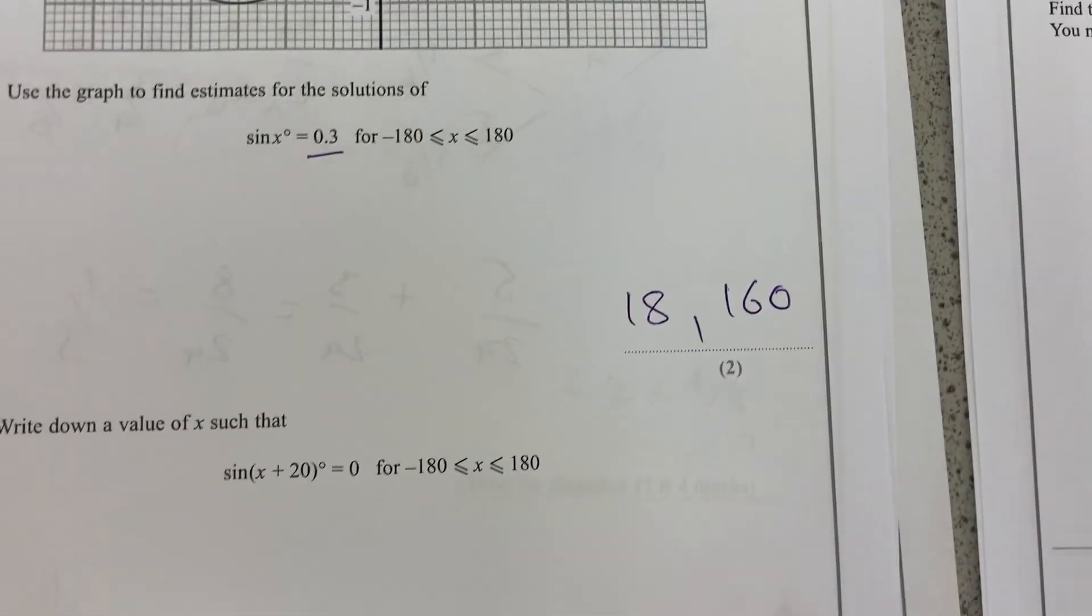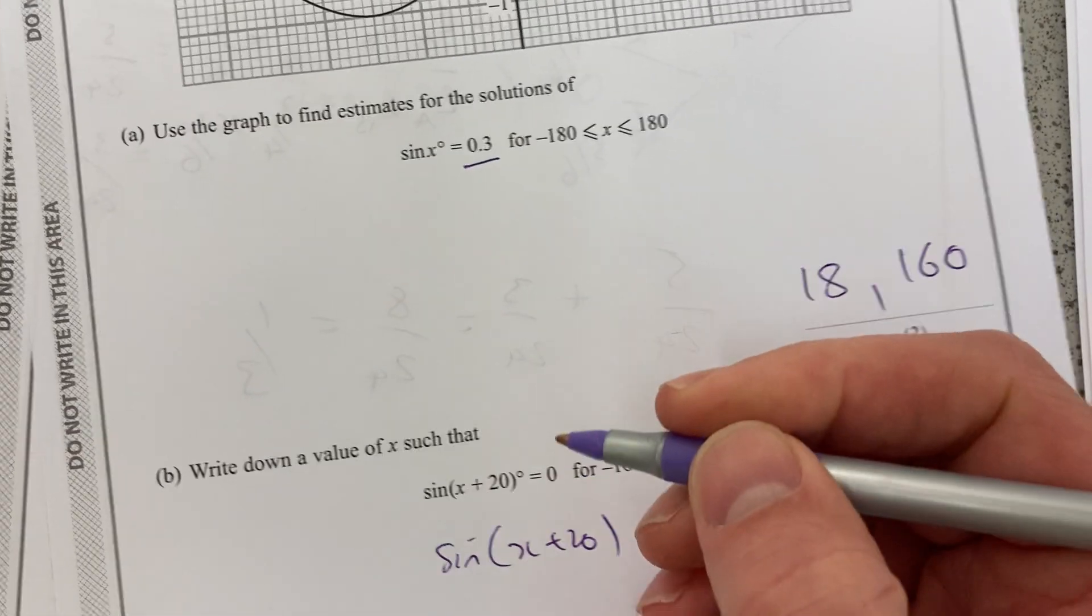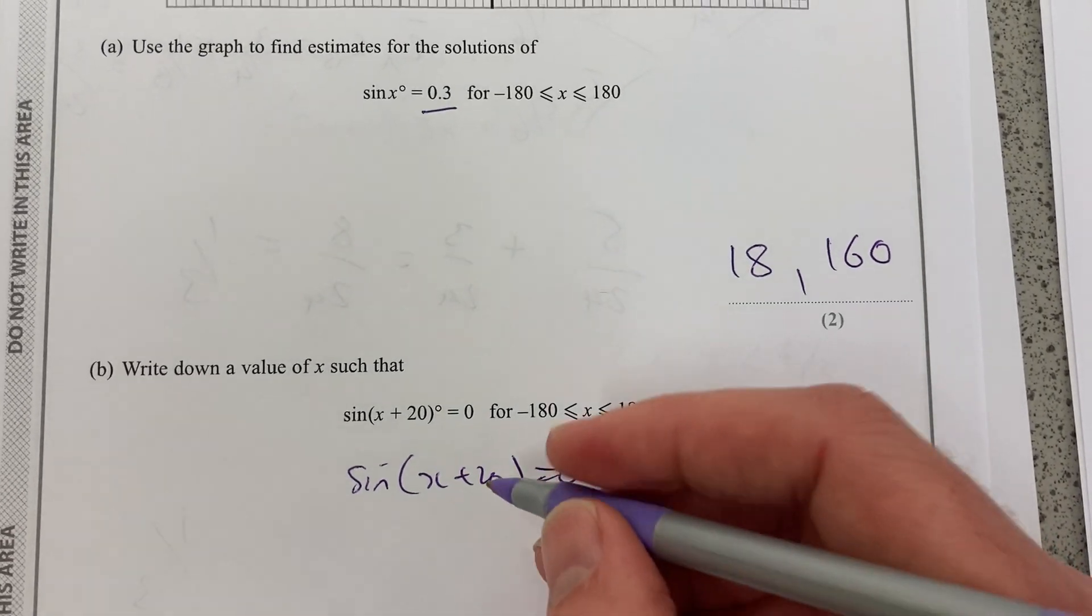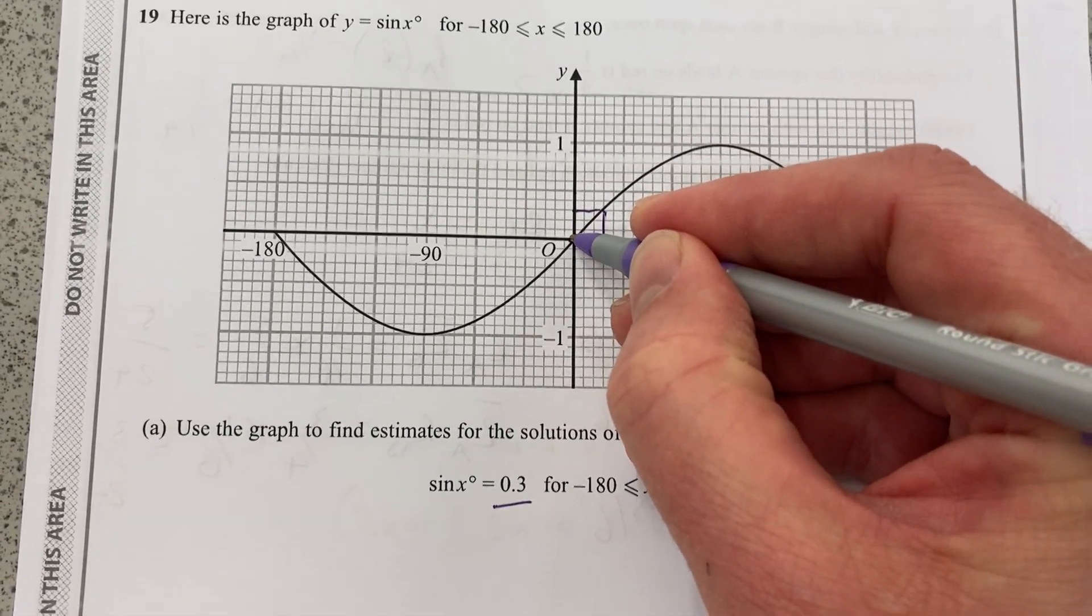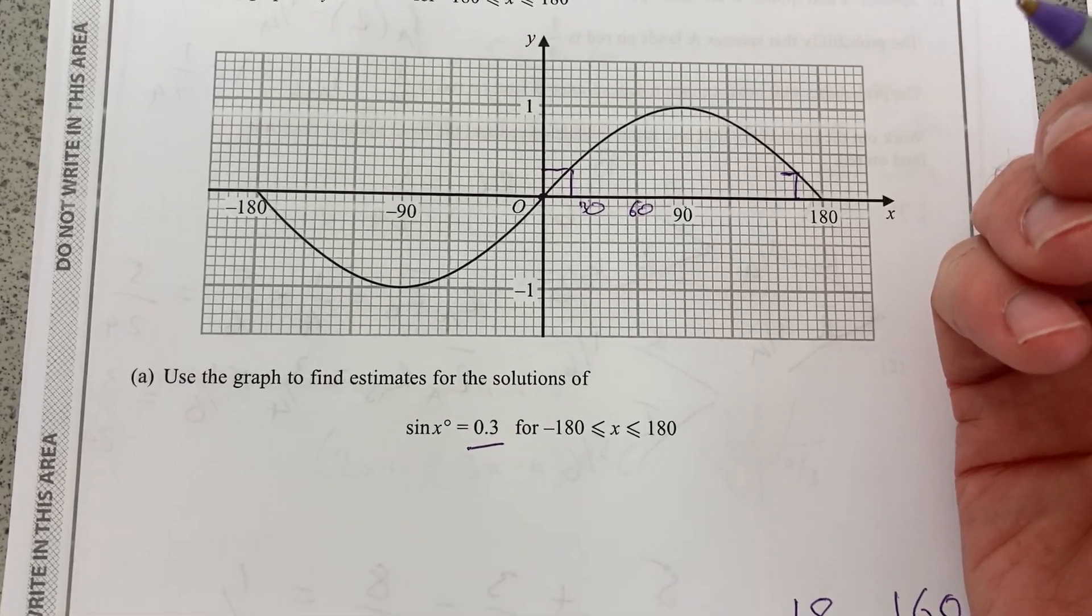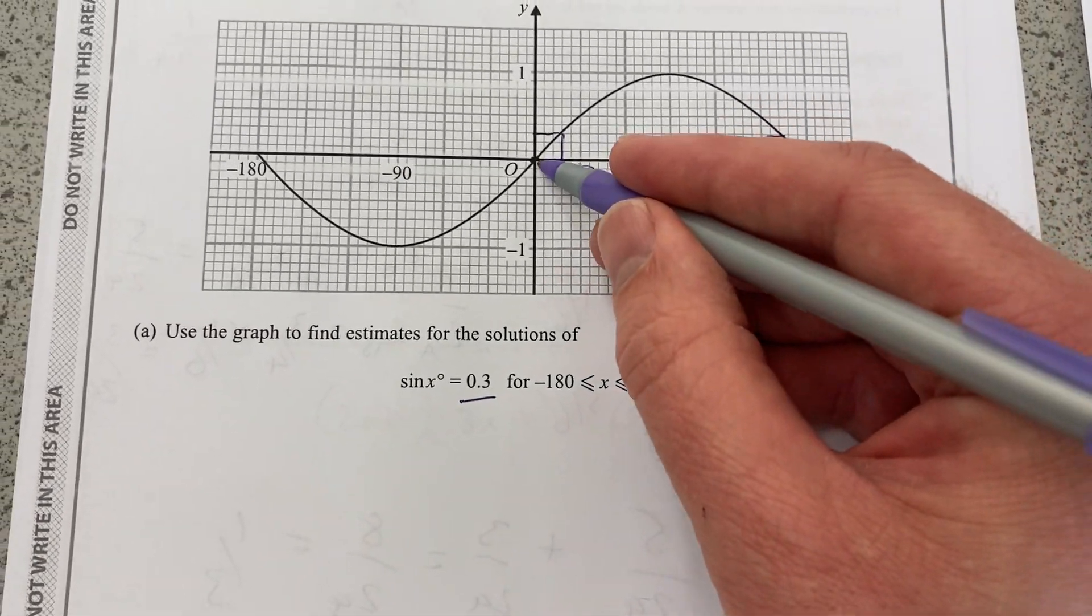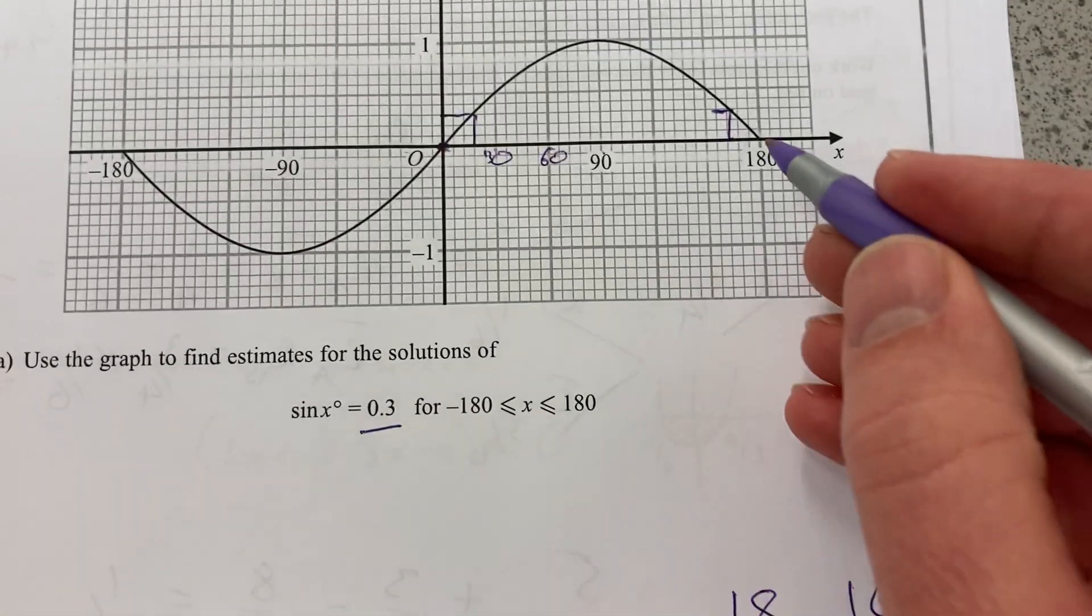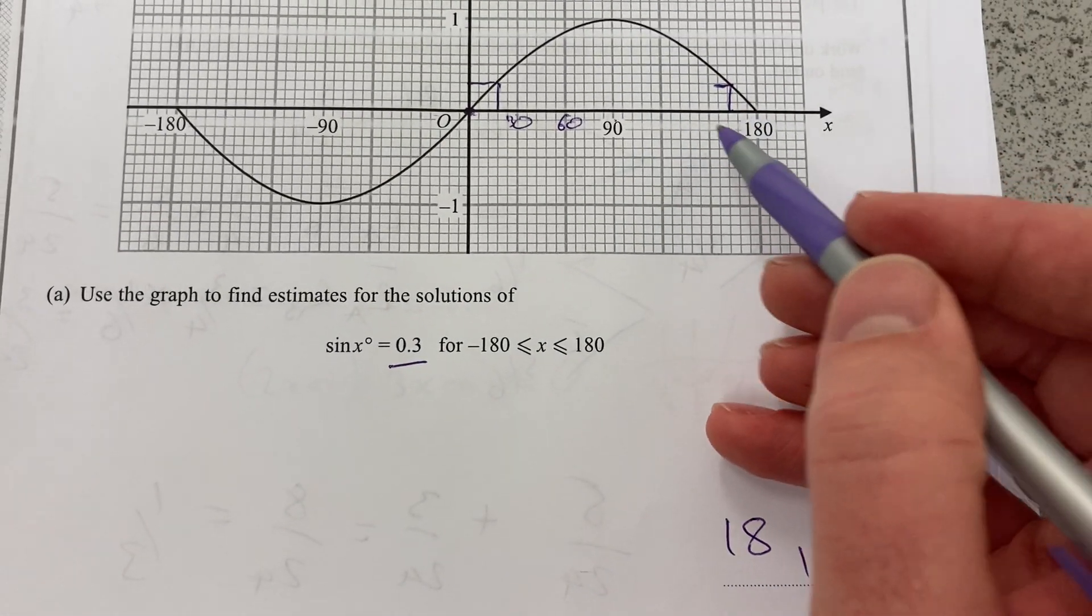And then here, write down a value such that sine x plus 20 equals 0. So, it's a transformation, a shift. Remember, although it's plus 20, it's actually to the left. So, we want that shifted by 20. So, for that case, it'll be, it was 0 at 0. So, it'll be minus 20. And it was 0 at 180. So, it'll be 160. Those two shifted by 20.